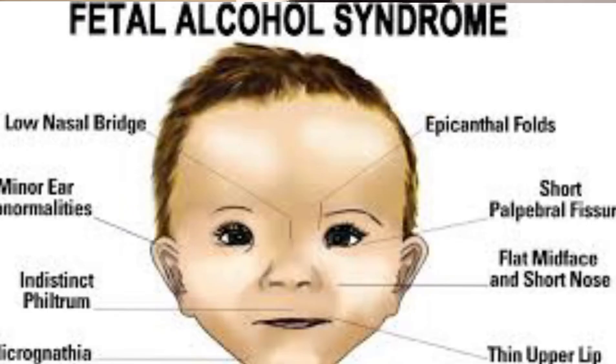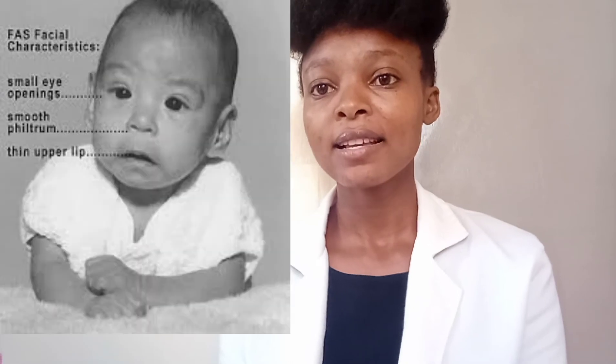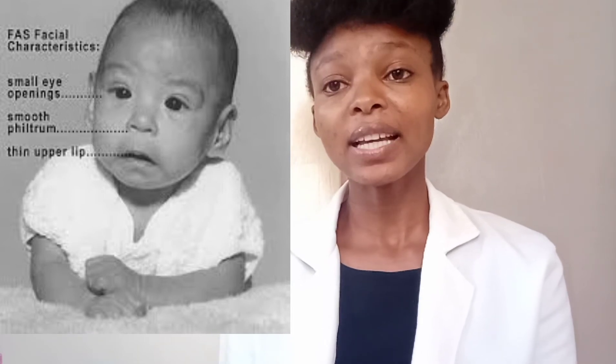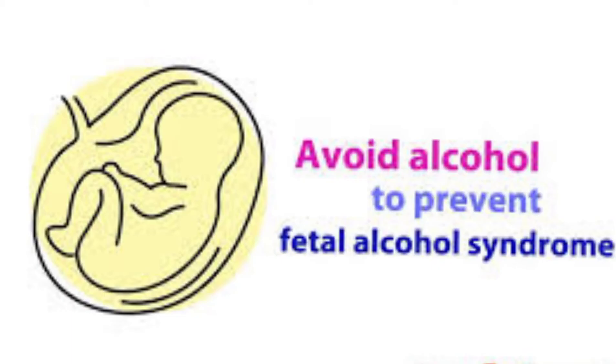Alcohol also affects the unborn baby. For pregnant women, alcohol causes what we call fetal alcohol syndrome. In this syndrome, the baby is born with brain damage and also has facial feature deformities — for example, abnormalities of the eyes and lips. If you are pregnant and want to give birth to a healthy baby, please stay away from alcohol throughout the nine months of pregnancy.